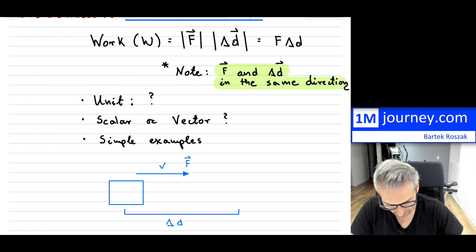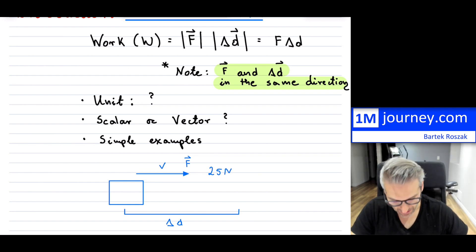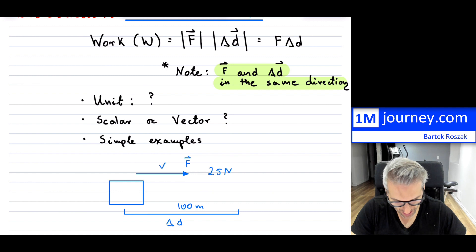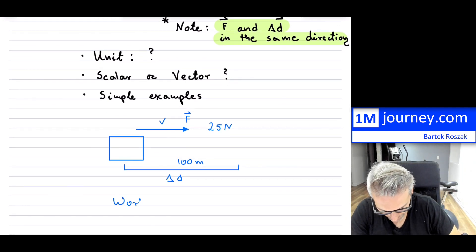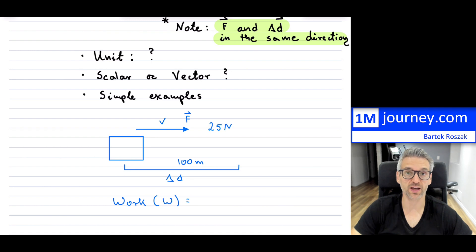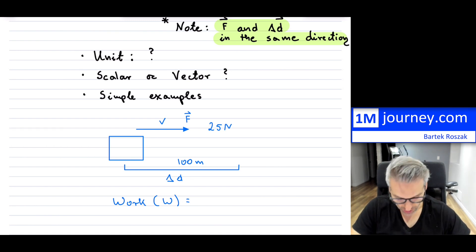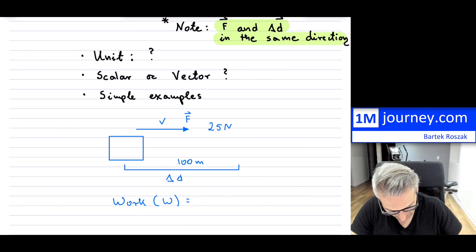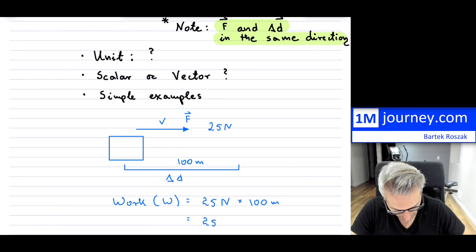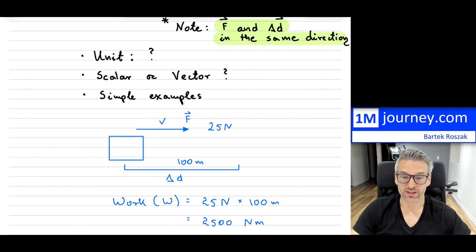So if you think of a force of 25 newtons — a constant force — and it displaced this object 100 meters, then what you would do is simply say that work W equals 25 newtons multiplied by 100 meters. Therefore, if you do that multiplication, you get 2,500. Notice the unit would be newton meters. So it's not very difficult to calculate that.